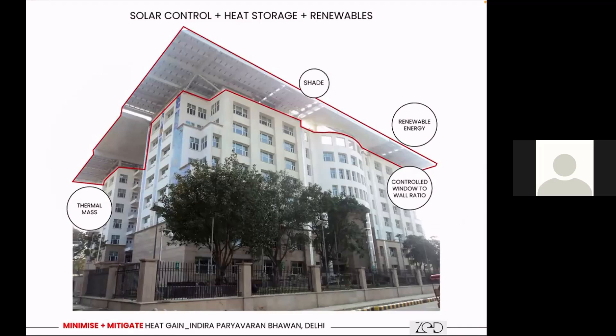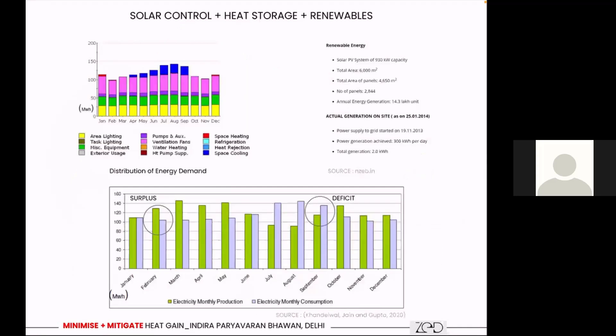Indriya Paraparabhavan uses a combination of all such technologies — thermal mass, right orientation, controlled window-to-wall ratio, renewable energy, and shading. The post-occupancy performance clearly shows the benefit: it stays energy-positive throughout the summer period. It is only when sun hours are low during the monsoon period that the energy demand of the building exceeds solar performance.